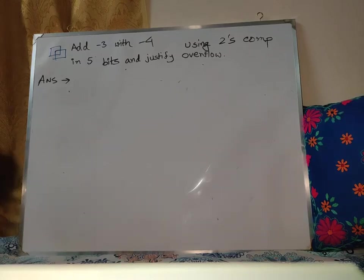Alright, so another example: add minus 3 with minus 4 using 2's complement in 5 bits, and justify whether there is an overflow or not.